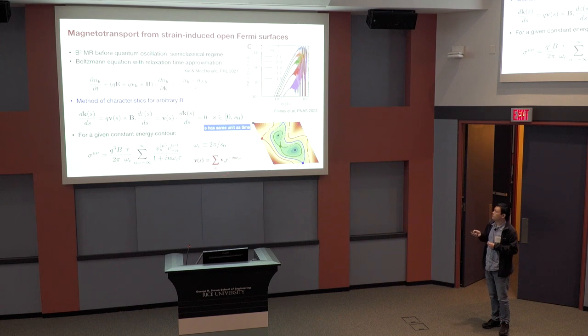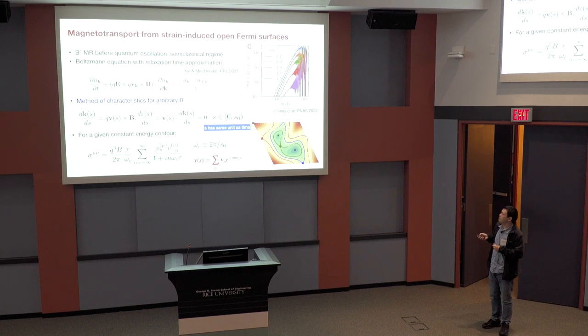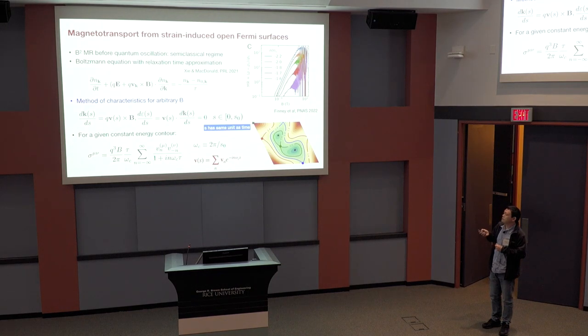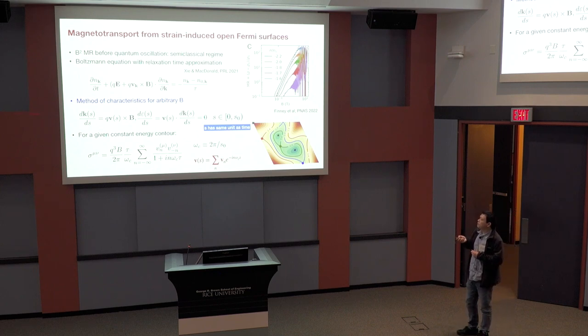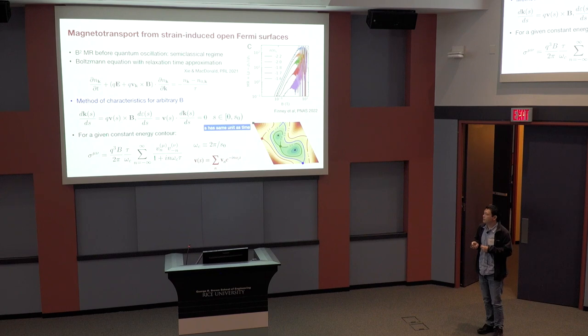For a closed Fermi surface contour, and the electrons just go around. But for the open Fermi surfaces, so it goes from one end of the Brillouin zone to the other end, and then gets Bragg scattered.